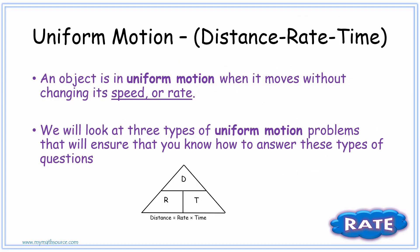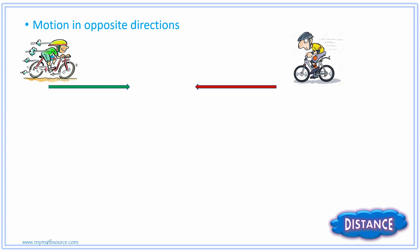Specifically, we're going to be dealing with a specific type of uniform motion. Uniform motion is basically when an object is moving without changing its speed or rate. We will look at three types of uniform motion problems in different videos, and in this one we're specifically dealing with something that is directly related to the formula distance equals rate times time. We're going to utilize this formula in a problem-solving method.